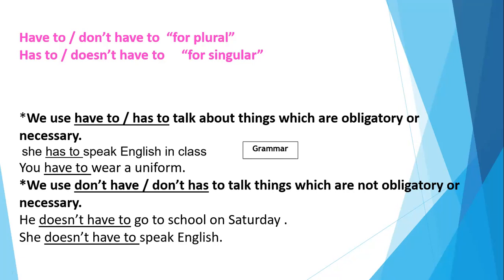In the negative, we use 'don't have to' and 'doesn't have to' to talk about things which are not obligatory or necessary. For example, you don't have to go to school on Sunday because it's a holiday.